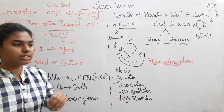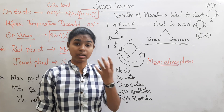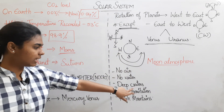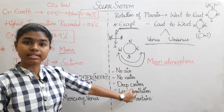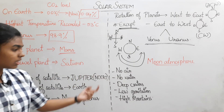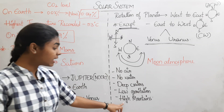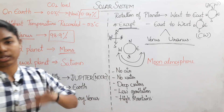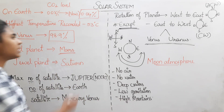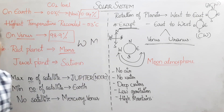The Moon has deep craters — craters are hollow, like the mouth of a volcano. The Moon also has low gravitation and high mountains.